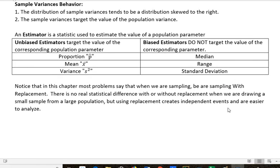I also wanted to mention that in this chapter most of the problems say that when we are sampling, we are sampling with replacement. There's no real statistical difference with or without replacement if we're drawing from a small sample from a large population. But there is a difference if we are drawing from a small sample from a small population.